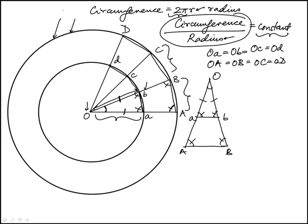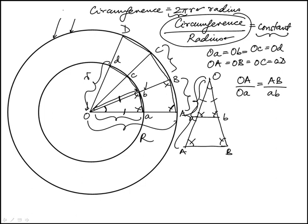So these are similar triangles, which means ratio of corresponding sides are equal, which means OA, this length, to small OA, which is the radius of the inside circle, is equal to AB over AB. And I'm actually going to call this radius large R and this radius small R. So this relationship would be R over R is AB over AB. So that's the first relationship.